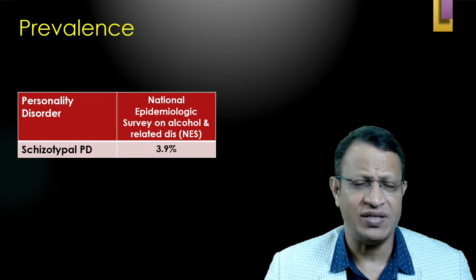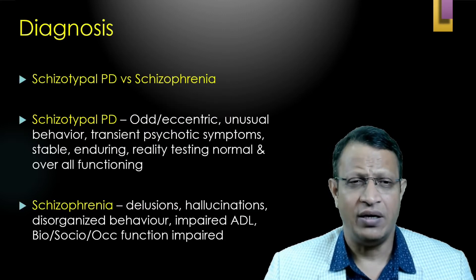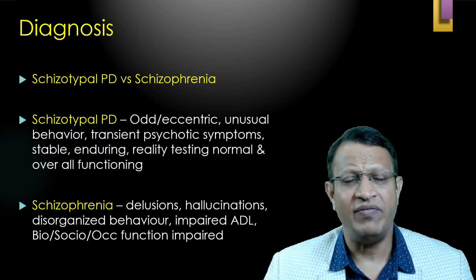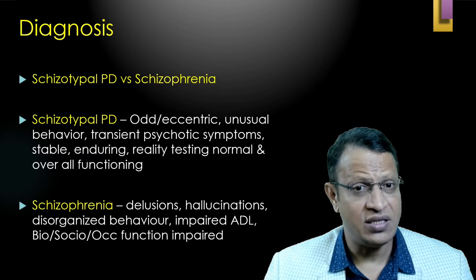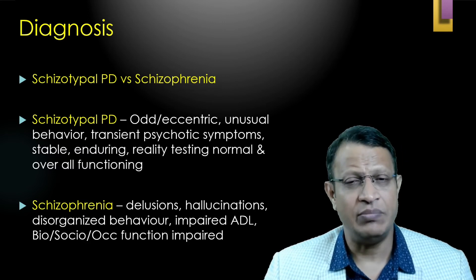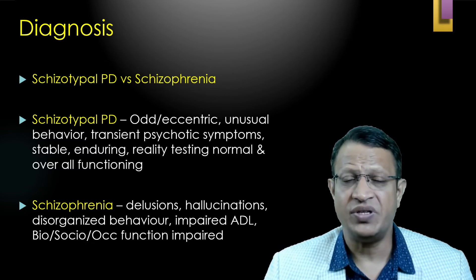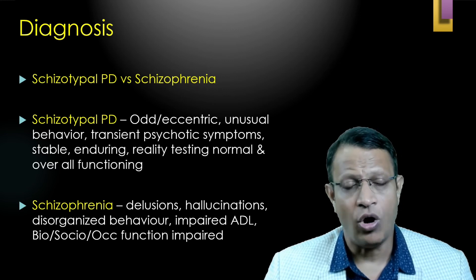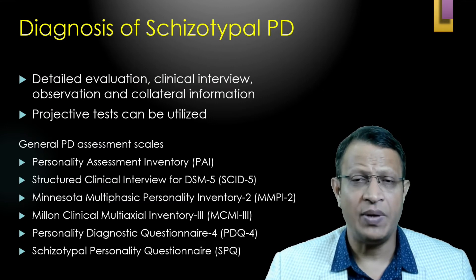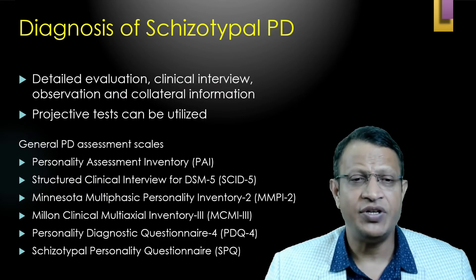The prevalence of schizotypal personality disorder is around four percent as per the National Epidemiological Survey. In differential diagnosis, schizotypal PD presents with odd, eccentric, unusual behavior and may have transient psychotic symptoms, but these are stable and enduring without true delusions or hallucinations. In contrast, schizophrenia patients have delusions, hallucinations, disorganized behavior, and impaired daily living, social, and occupational functioning.